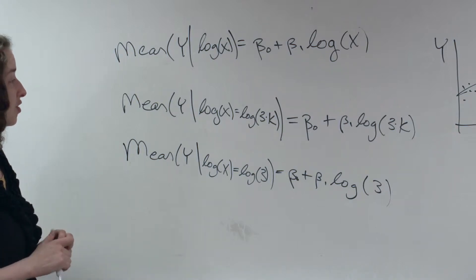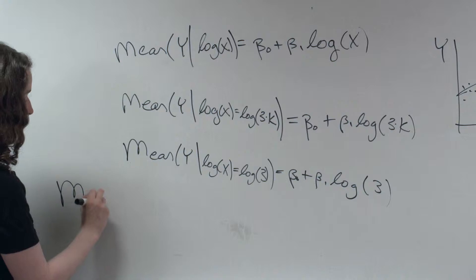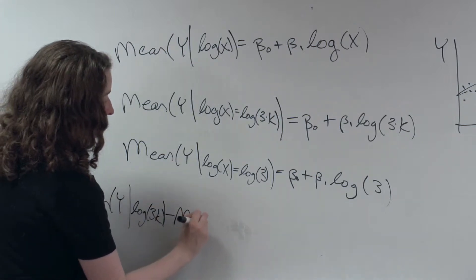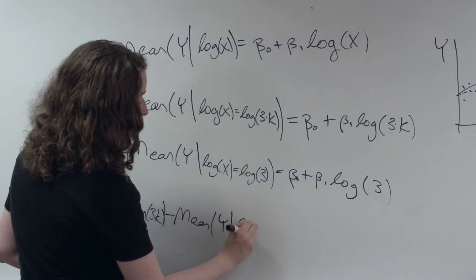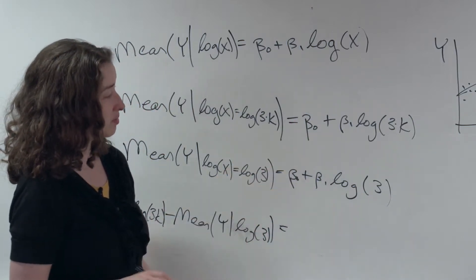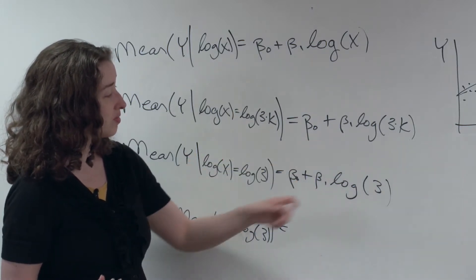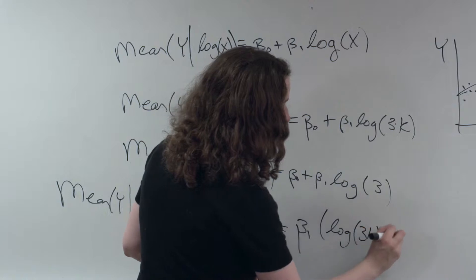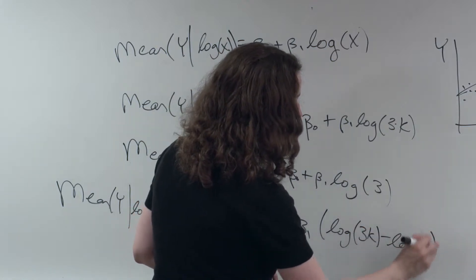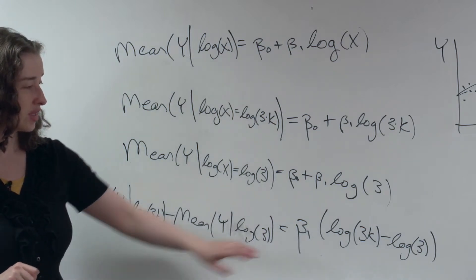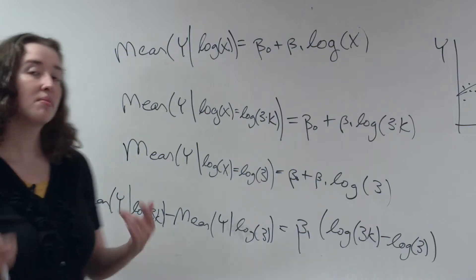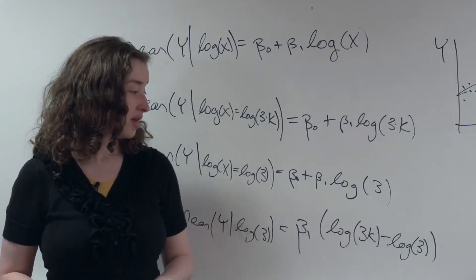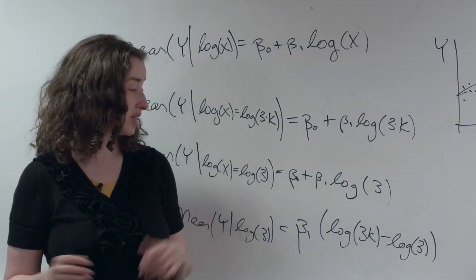So now I'm going to go through the same scenario as before. I'm going to subtract the left sides and subtract the right sides. I've got the mean of y given log of 3k, minus the mean of y given the log of 3, is equal to beta 0 minus beta 0, which cancels. Then beta 1 log 3k minus beta 1 log 3 — let me factor out the beta 1. Here is the log of 3k minus the log of 3. We're going to remember the log rules: the log of a times b, the log of 3 times k, is equal to the log of a plus the log of b — the log of 3 plus the log of k.